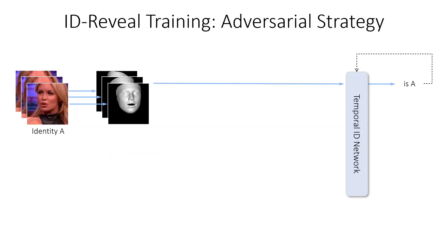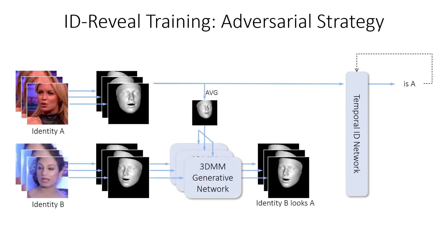For each frame, we use a 3D morphable model to extract face features. Our temporal ID network maps these sequences into an embedding space, clustering them by identity using metric learning. In addition, we perform adversarial training by synthesizing these features. This incentivizes the network to rely mostly on temporal characteristics instead of only visual cues.